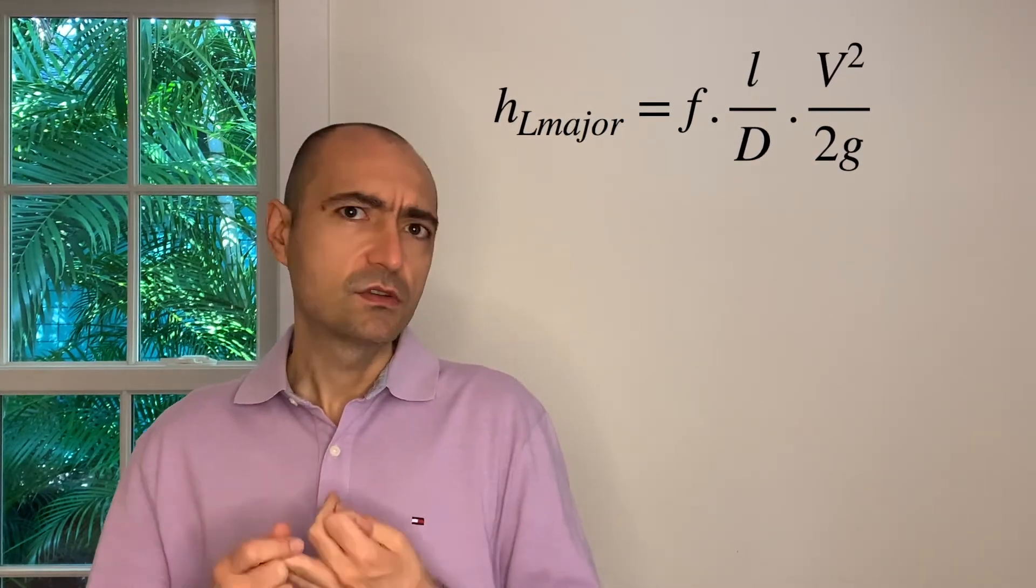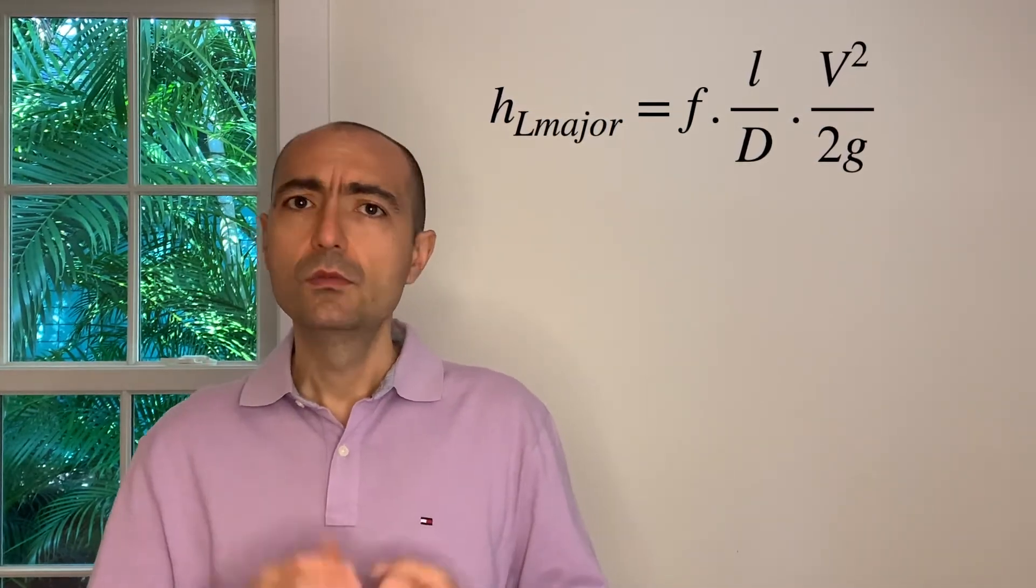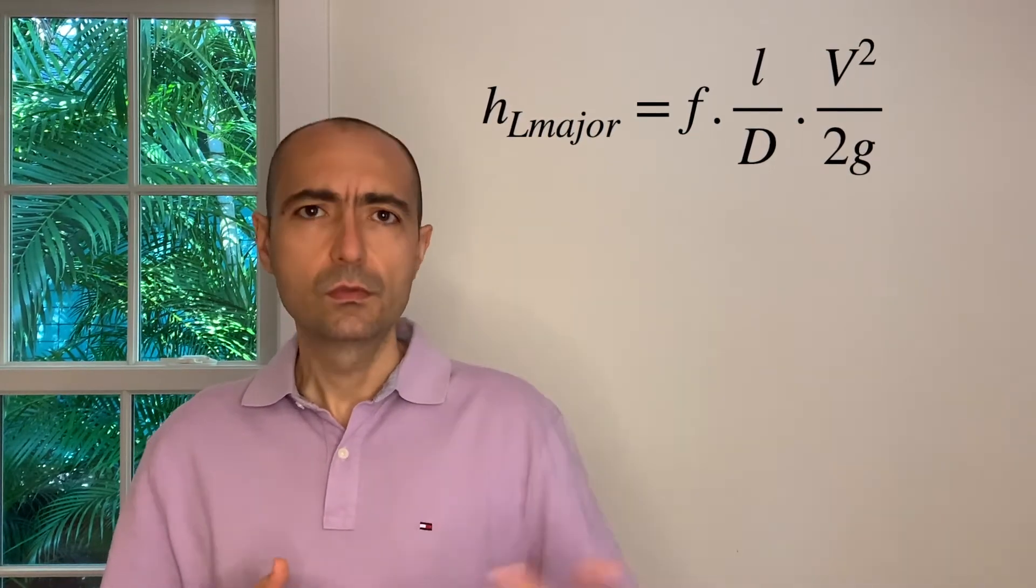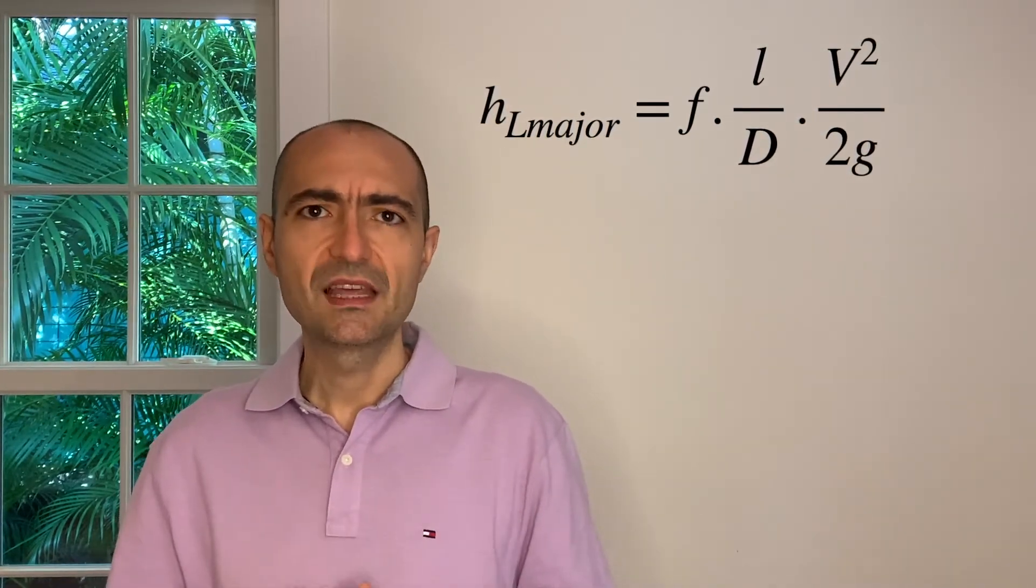And this f value, if it is laminar—again, just repeat myself—it is 64 over Reynolds. If it is transitional or turbulent, you have to look at the Moody's chart or the equations that we called Colebrook or modified Colebrook equation. So you need to visit that to find your f value. Other than that, there's nothing complicated in this particular approach. And then I did several examples to illustrate how this all comes together, and I obviously neglected the minor losses because I don't teach you that yet.